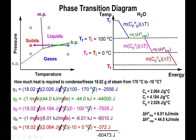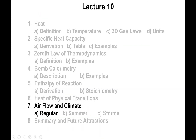For 18 grams of water — about 18 milliliters — cooling from 170°C to -10°C, the total energy released is approximately 60,473 joules. That is a substantial amount of energy, which will be used in the next explanation to wrap up this lecture. This concludes the video, with one more video remaining to cover the final part of the lecture.